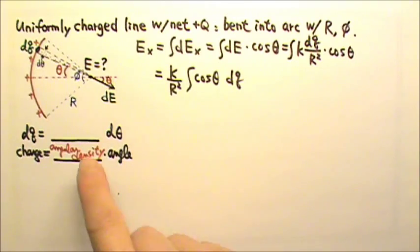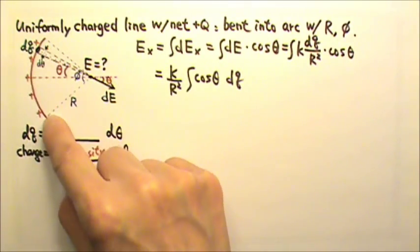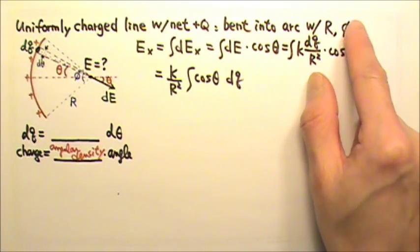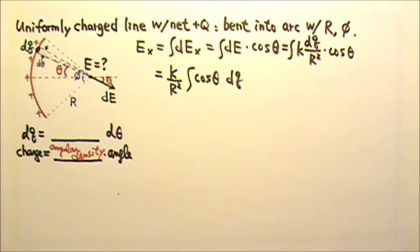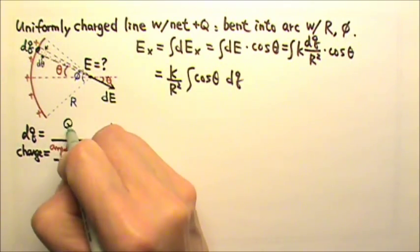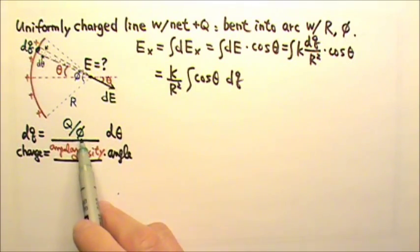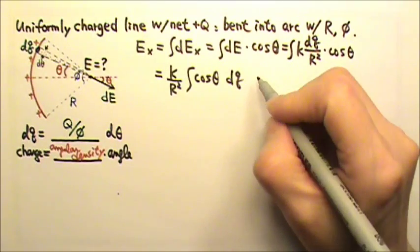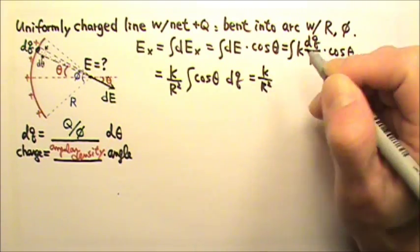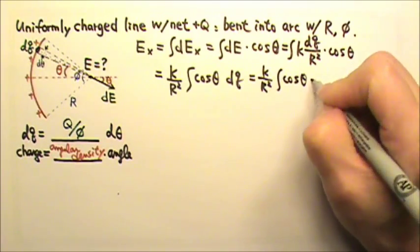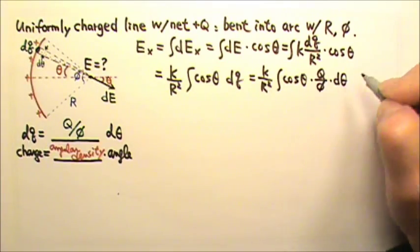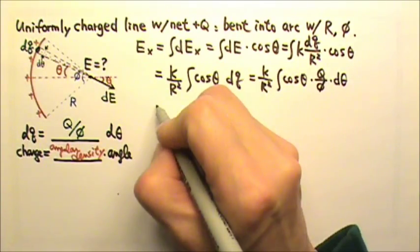What is the angular charge density for this arc? The arc has a net charge of positive q and a total angle of phi. So the angular charge density is the total charge divided by the total angle: q over phi. That's charge per angle. Now I can replace dq with (q/phi)·d theta.